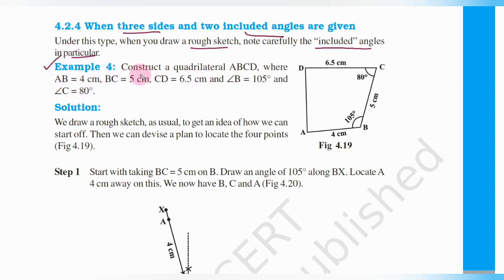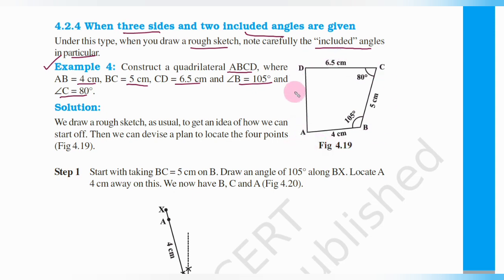Example 4: Construct a quadrilateral ABCD where AB is equal to 4 cm, BC is equal to 5 cm, CD is equal to 6.5 cm, angle B is equal to 105 degrees and angle C is equal to 80 degrees. We draw a rough sketch as usual to get an idea of how we can start off. Then we can devise a plan to locate the 4 points.